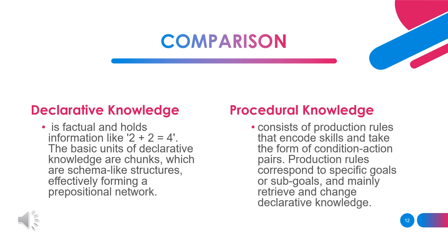Comparison between declarative knowledge and procedural knowledge: declarative knowledge is knowing a piece of information — knowing you know you can do something — and it can be declared in conscious expression. Procedural memory is an element responsible for knowing how to do things. It is unconscious, non-declarative, and a long-term memory of motor skills, such as riding a bike, catching a ball, and typing.